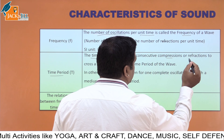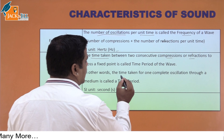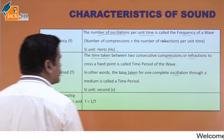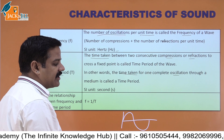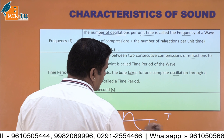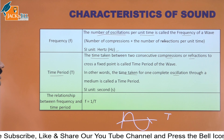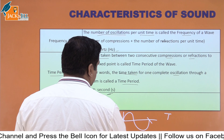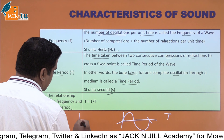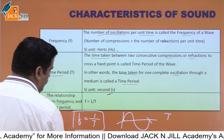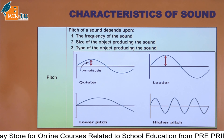What is time period? The time taken between two consecutive compressions or two consecutive rarefactions to cross a fixed point is called the time period of a wave. In other words, the time taken for one complete oscillation through a medium is called the time period. The relationship between frequency and time period: frequency equals one divided by T. I hope this is clear to you.